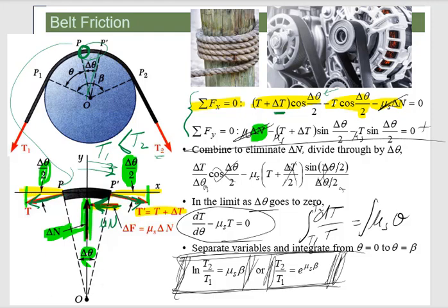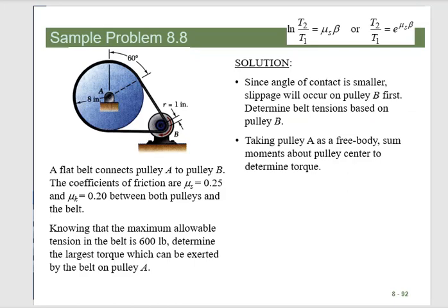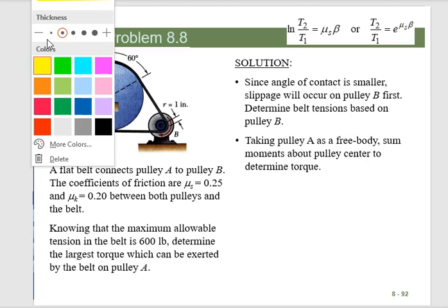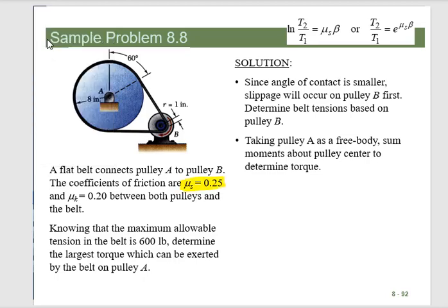So here's an example problem that we can go through. So we have a belt connected to two pulleys. And there's a coefficient of friction between them. So let's start highlighting the relevant information here. So here's static versus kinetic. And knowing that the maximum allowable tension before this thing is going to snap is 600 pounds, find the largest torque exerted on the belt by pulley A.